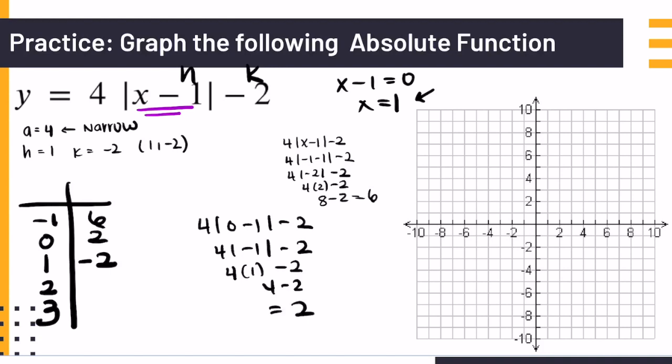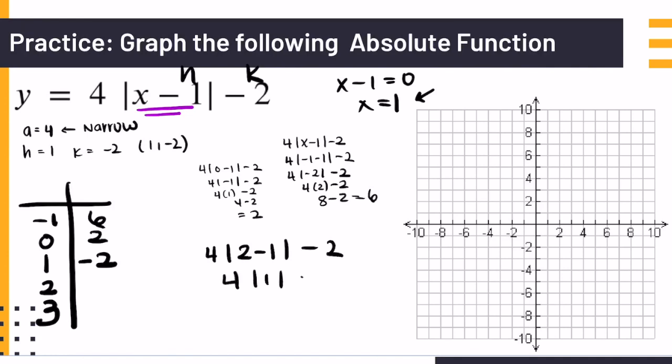Then you'll plug in 2 for x. 4 times 2 minus 1 is 2. That's 4 times 1, absolute value of 1 minus 2, which is 4 minus 2, which is 2. And if you plug in 3, you'll get 6.